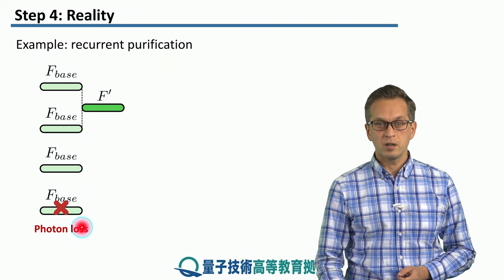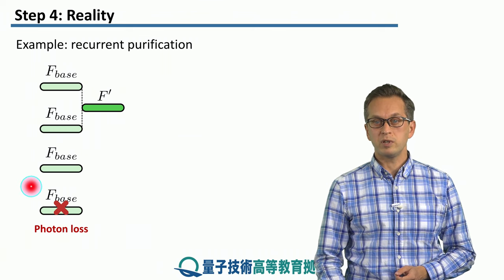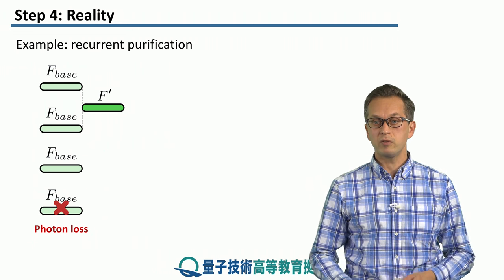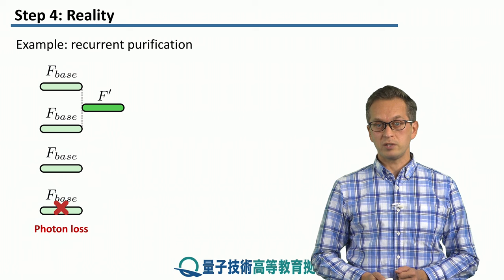But in this case here, we lose a photon, so we never actually distribute this bell pair, this base bell pair. We only have a single one. Therefore, we cannot continue with purification on that pair.